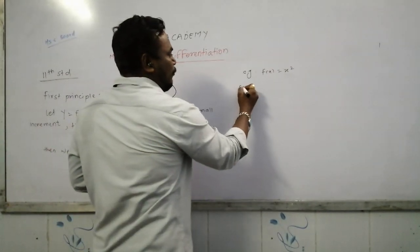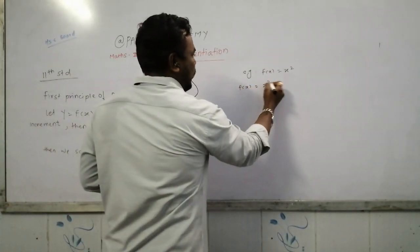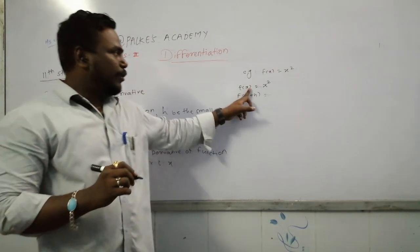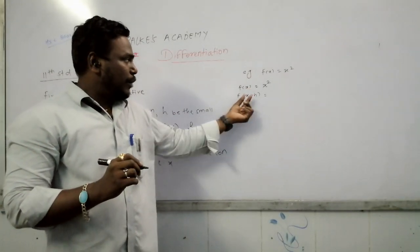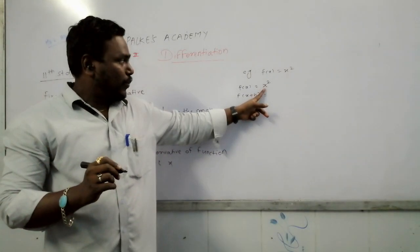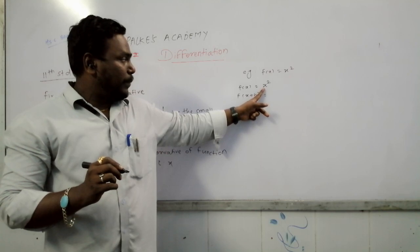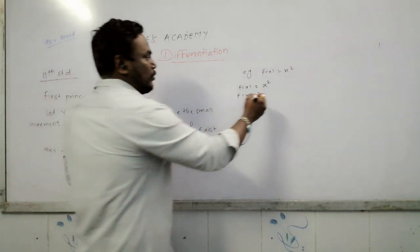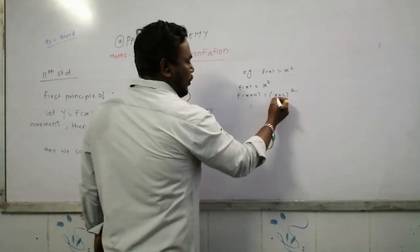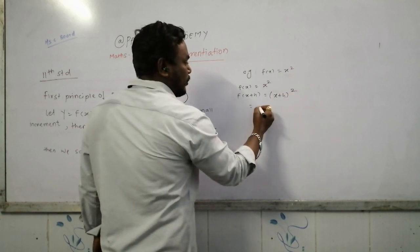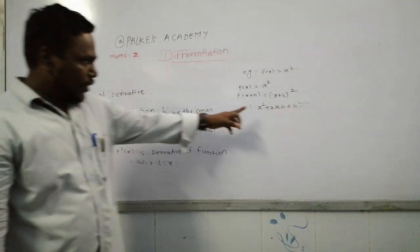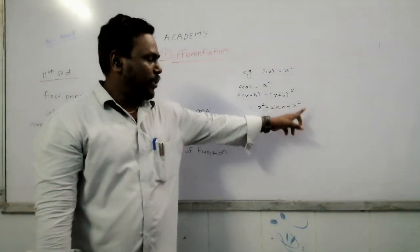f(x) is x squared. f(x+h): in place of x, we write x plus h, so f(x+h) equals (x+h) whole squared. By expanding using the formula (a+b)² = a² + 2ab + b², this becomes x squared plus 2xh plus h squared.